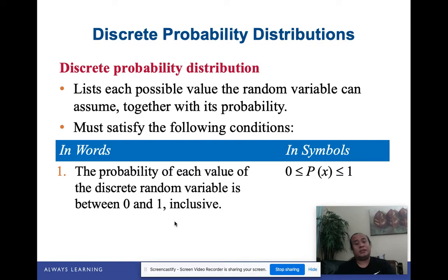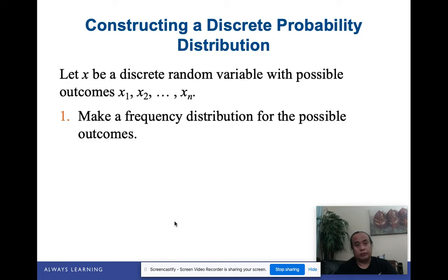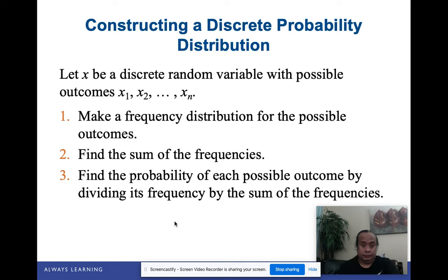A discrete probability distribution should satisfy the following conditions. First, the probability of each value should be between 0 and 1. Second, the sum of all the probabilities must equal 1. To construct one, you're basically creating a table. In some problems you make frequency counts, then get the percentage from the total representing the probability. Make sure that the sum of the percentages equals the total, making the probability equal to 1.